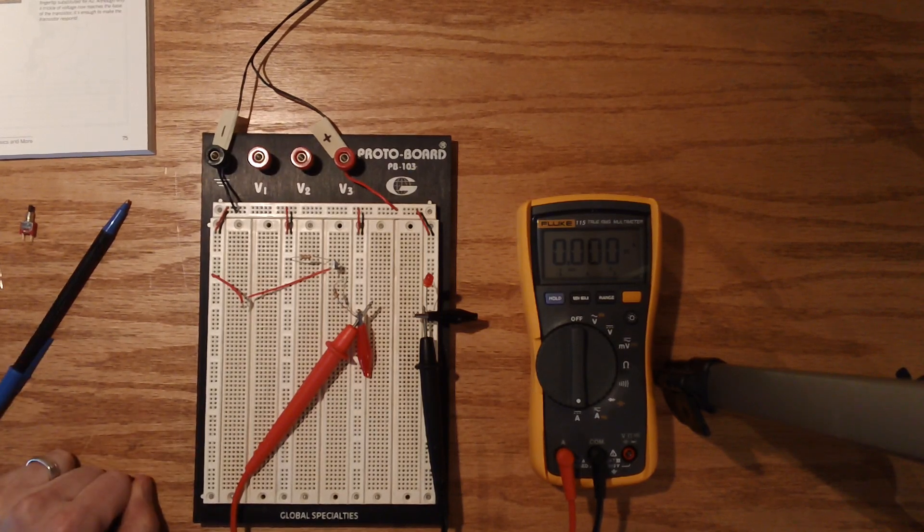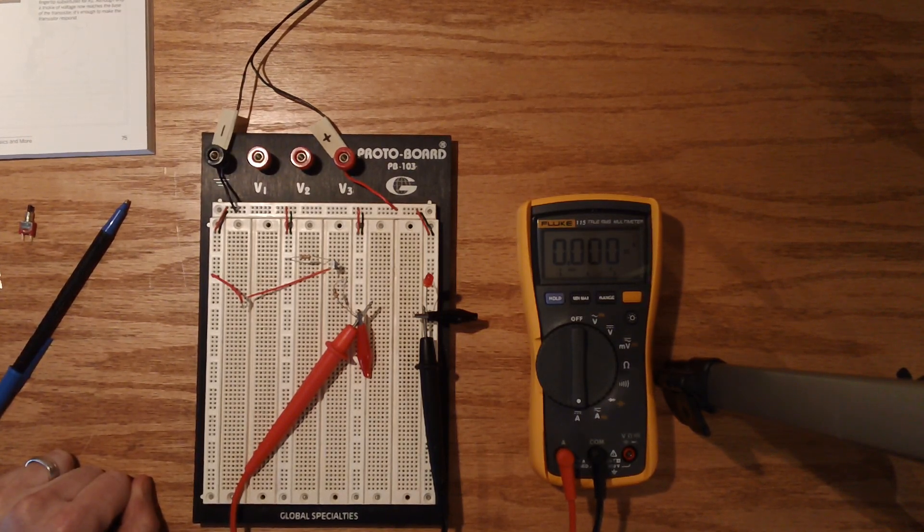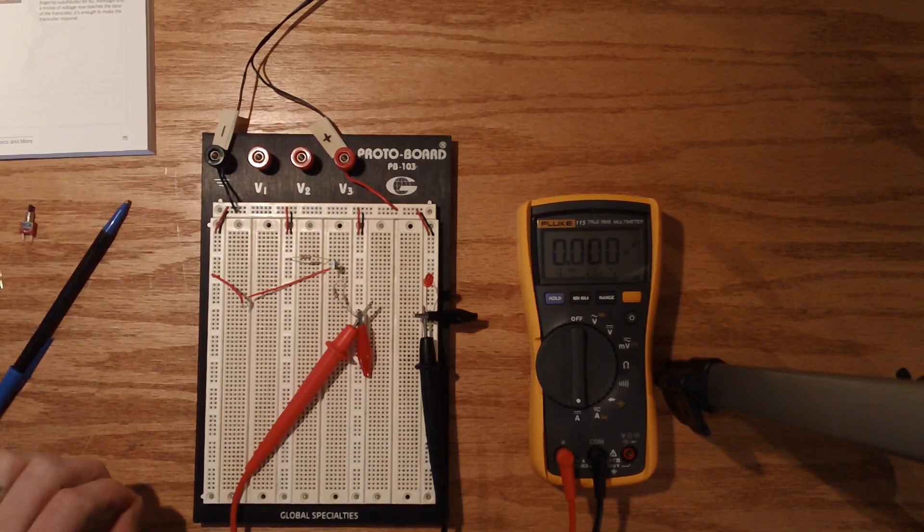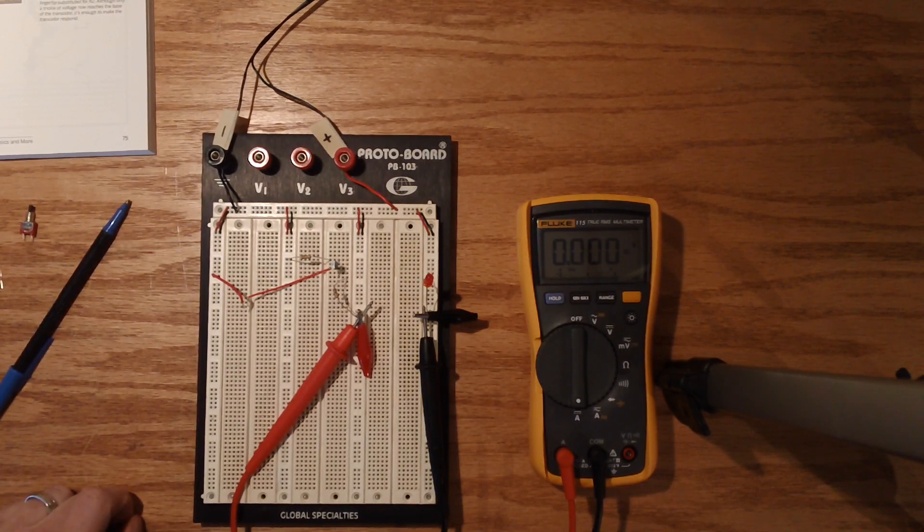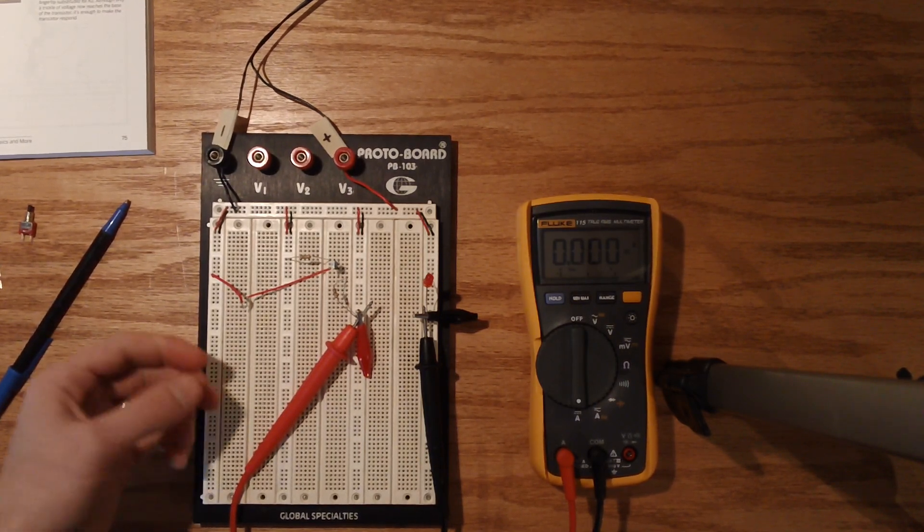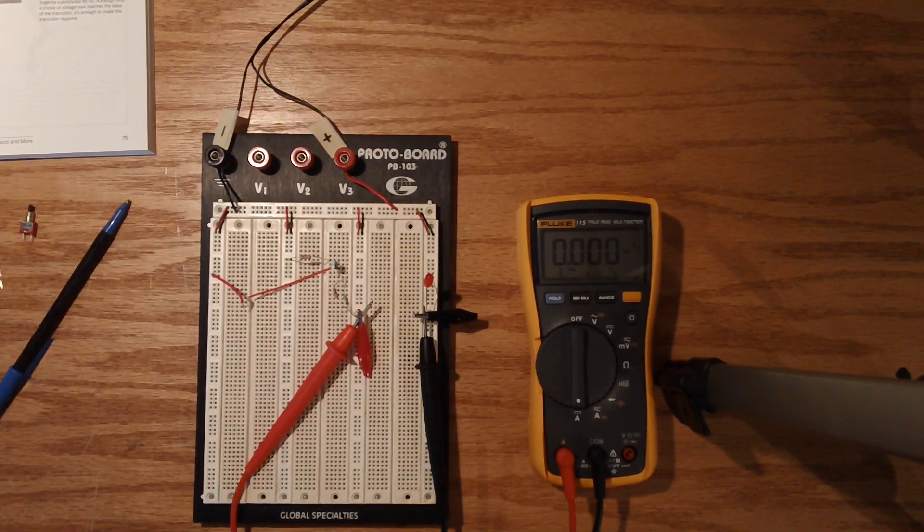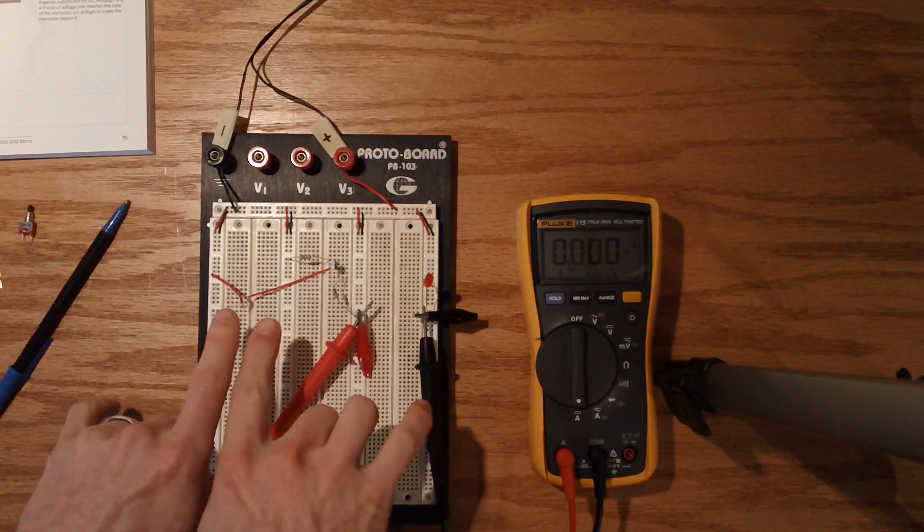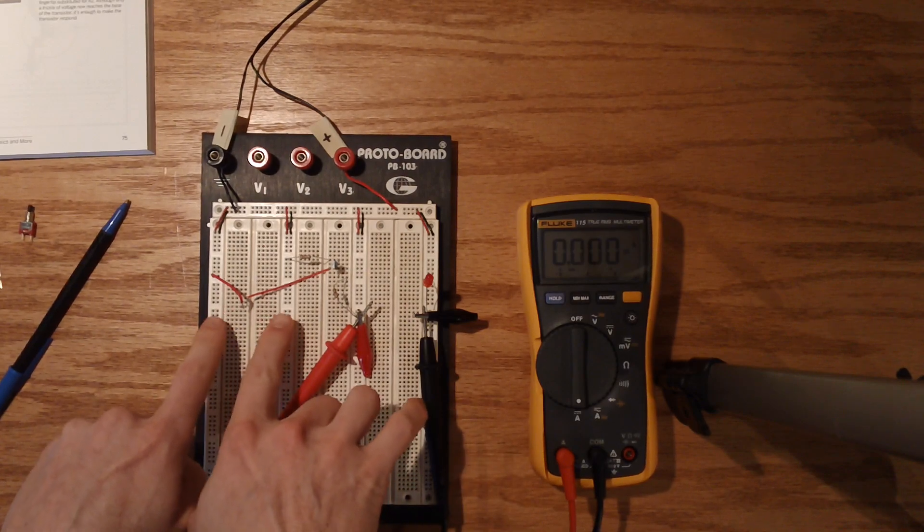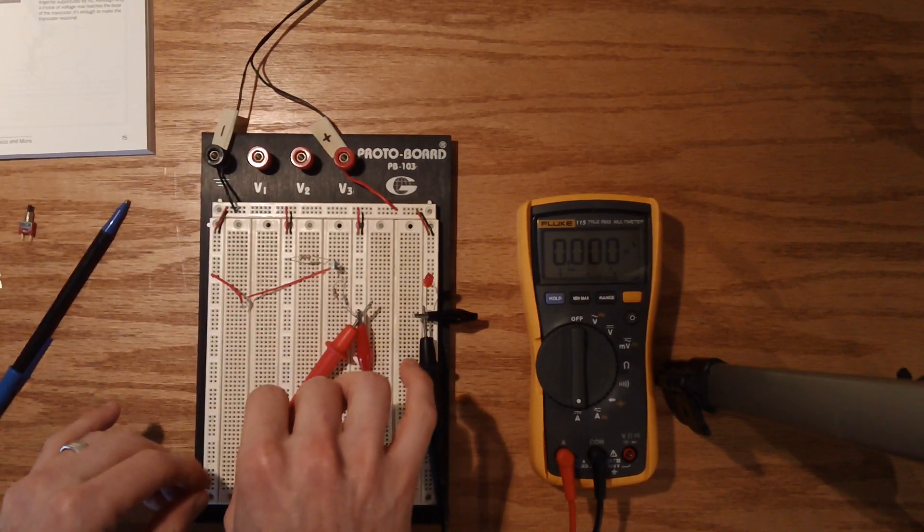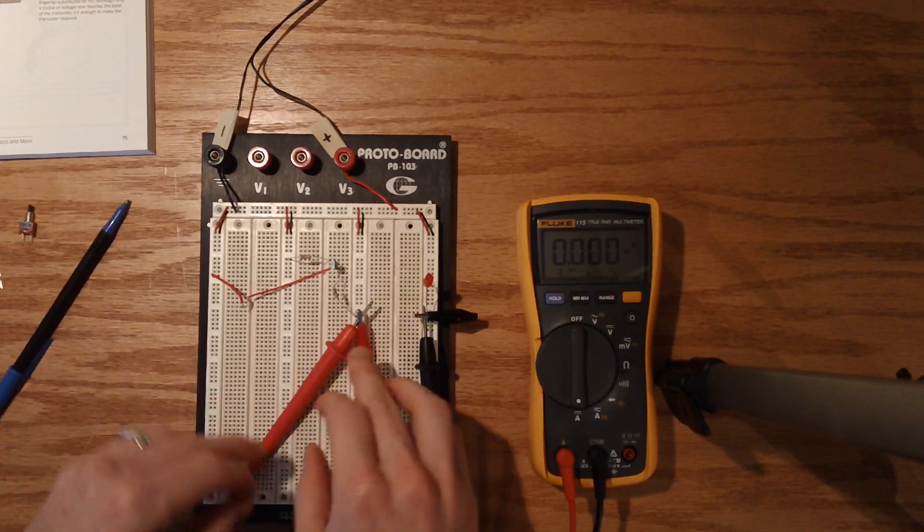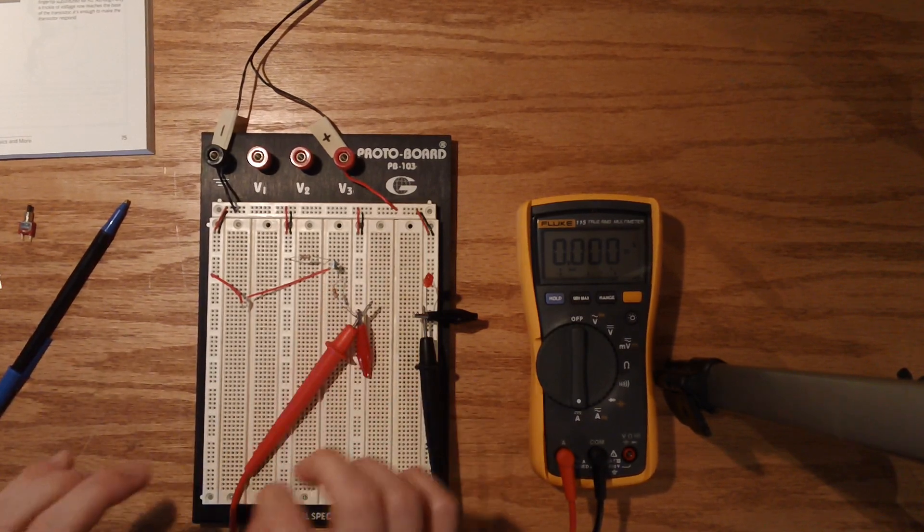I can't feel a thing on my finger. So yeah, what we are showing is that overall, when we add resistance to the base pin, that was, the greater the resistance, the less current ended up flowing out the emitter pin.